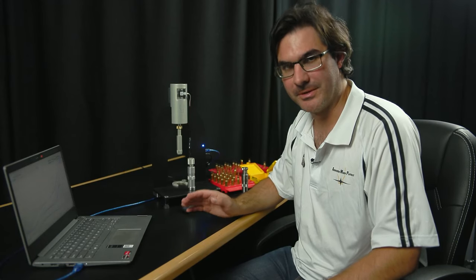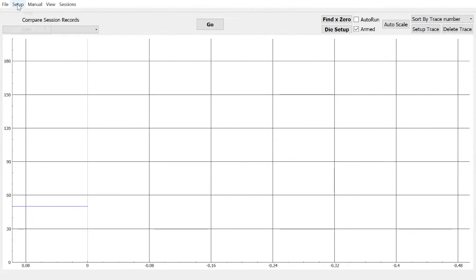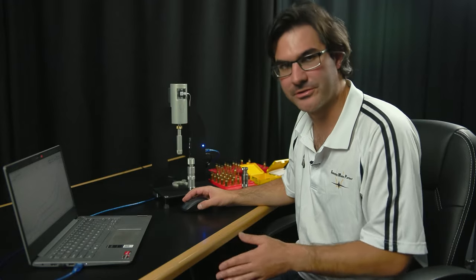Now to cover some important menu items. If we look at setup, you've got units, and that allows you to change the scale into either metric or imperial. So pounds, kgs, over inches or millimeters.